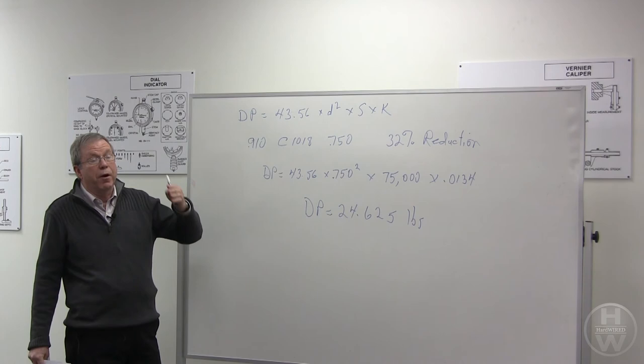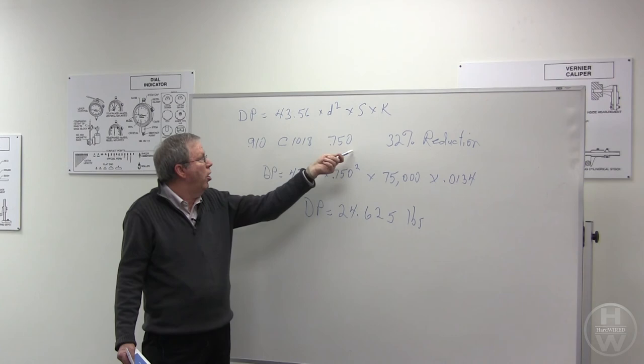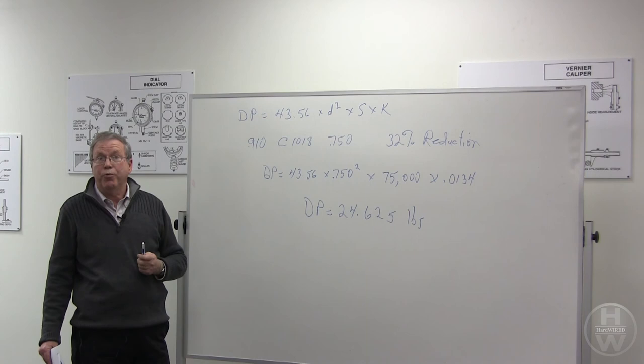We do the math and it comes out that the die pull is 24,625 pounds. And from our first equation where we had 23,685 pounds available, we would see that no, we cannot draw this product on that last example that I just gave that only had 23,000 pounds of die pull.